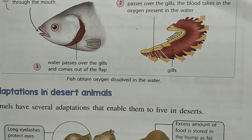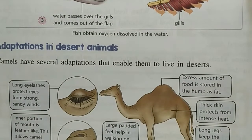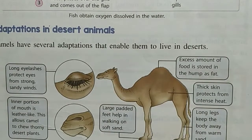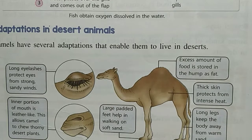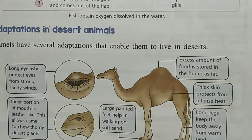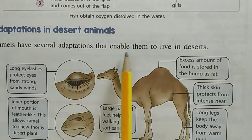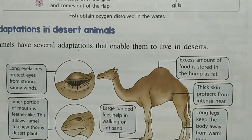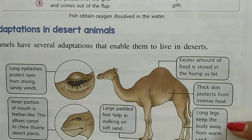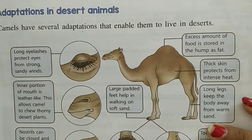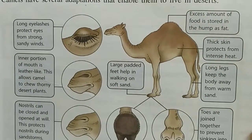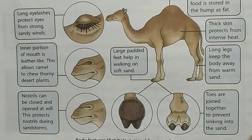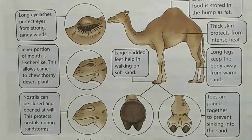Our next topic is adaptations in desert animals. Ab adaptation in desert animals — desert animal matlab humare mind mein ek hi picture aata hai, which is camel. So now let us learn about some details about camels. Camels have several adaptations that enable them to live in desert. Kuch aise habits hain jo unhe desert mein rehne mein help karti hain. So here, with the help of a diagram, we will learn about adaptations of camels.